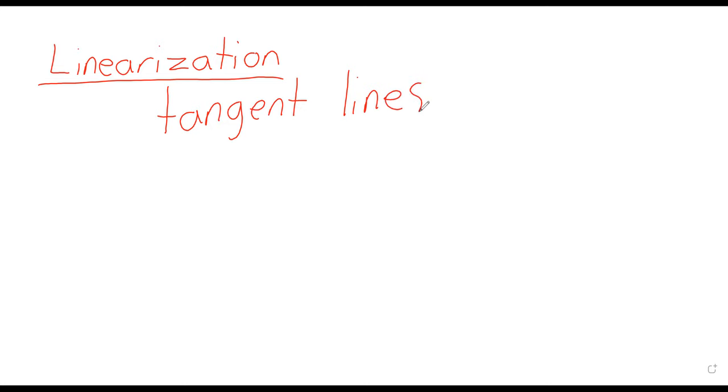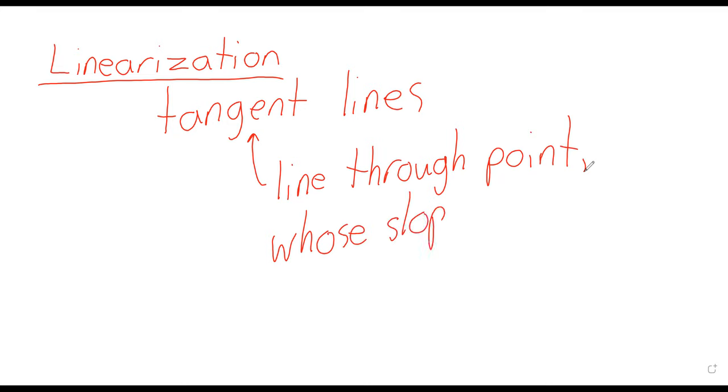Linearizations are really just tangent lines. So let's remind ourselves: a tangent line is a line through a point whose slope is the derivative. When we first talked about tangent lines we didn't have any good way of finding derivatives, but now we do and finding tangent lines is hopefully relatively straightforward.